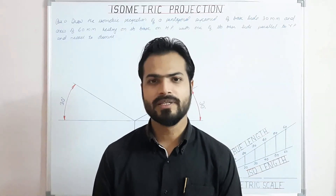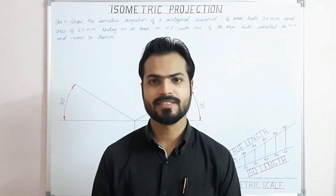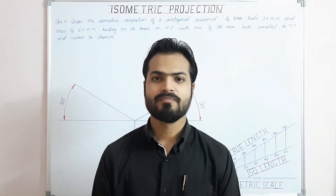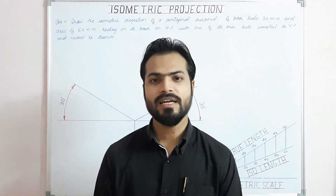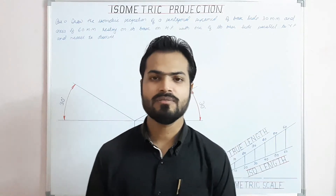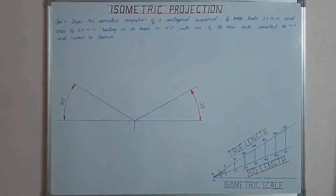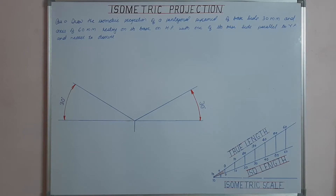Hello everyone, hope you have completed all the problems we discussed earlier. Today we are going to project a pentagonal pyramid in basic position and inverted position. Draw the isometric projection of a pentagonal pyramid of base side 30 mm and axis of 60 mm, resting on its base on HP with one of its base sides parallel to VP and nearer to observer.